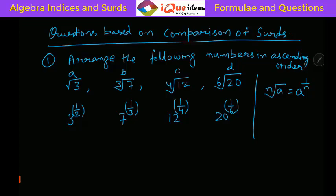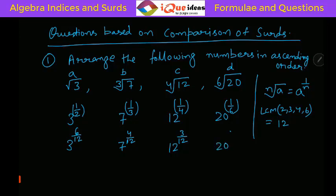Let us make the denominators equal by calculating the LCM of 2, 3, 4, and 6, which is 12. To make 12 in all denominators: 1/2 becomes 6/12, so it is 3 to the power 6/12. Then 7 to the power 1/3 becomes 7 to the power 4/12. Then 12 to the power 1/4 becomes 12 to the power 3/12. And 20 to the power 1/6 becomes 20 to the power 2/12.